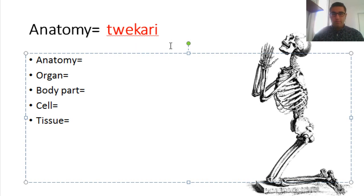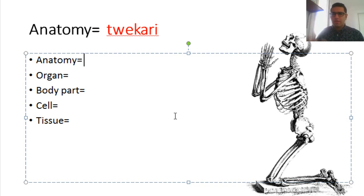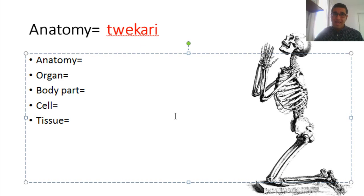First of all, we have anatomy. Anatomy in Kurdish we say tuyakari. There is also an Arabic word — I forgot to write it down — but the Kurdish word is tuyakari. The Arabic word is tashrih, which means dissection or anatomy. In Kurdish, tuyakari means both anatomy and dissection.